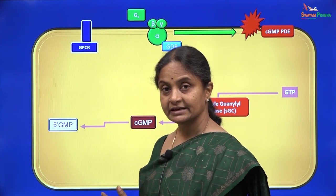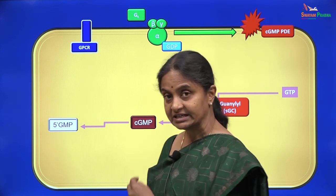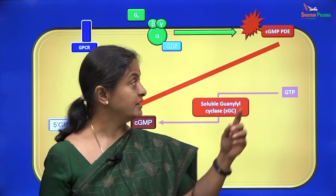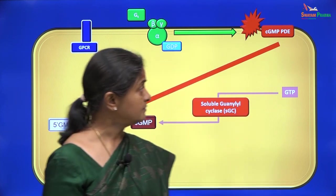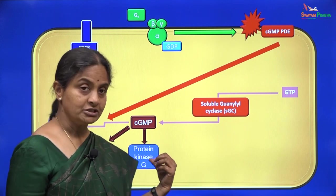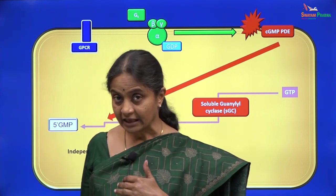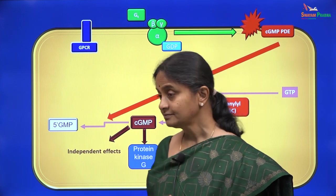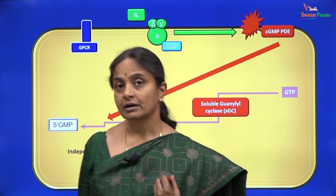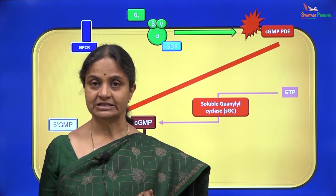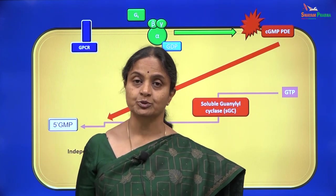cGMP is normally degraded to 5-GMP, and that is how levels of cGMP within the cell decrease. That is indeed what the membrane enzyme cGMP phosphodiesterase does — it decreases cGMP levels within the cell. cGMP can activate protein kinase G, but it can also have independent effects. The best known functions of cyclic GMP are in the rods and cones and in the vascular smooth muscle. In the rods and cones, cGMP levels are modulated by the G protein coupled mechanism, and that is what we will see first.